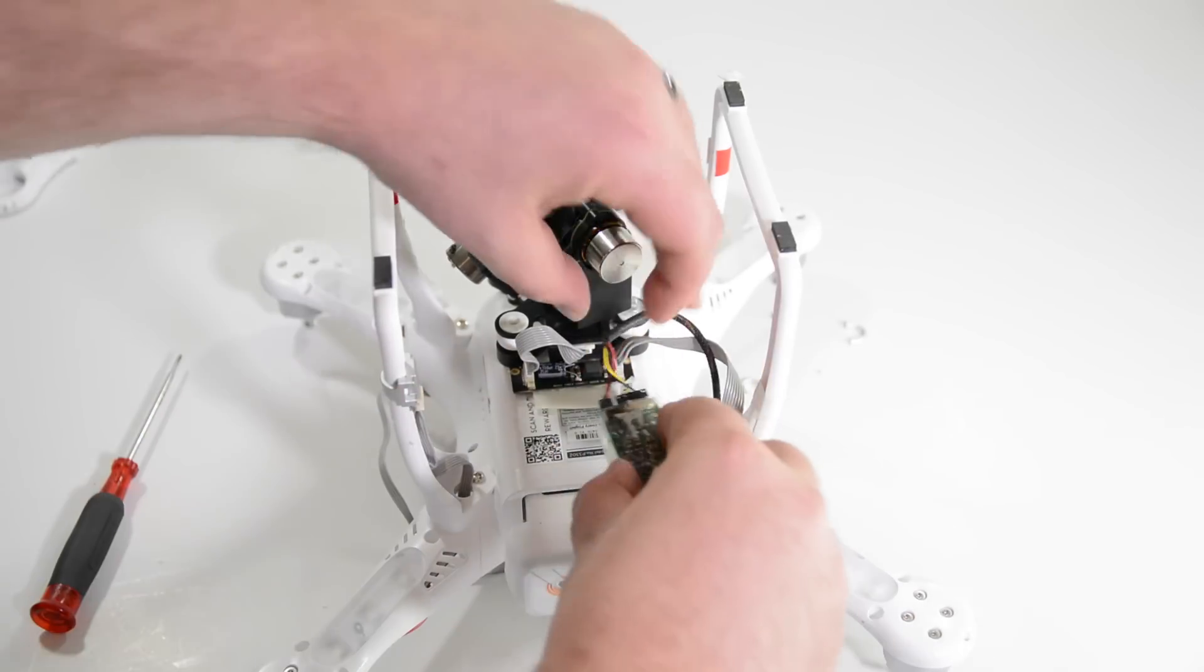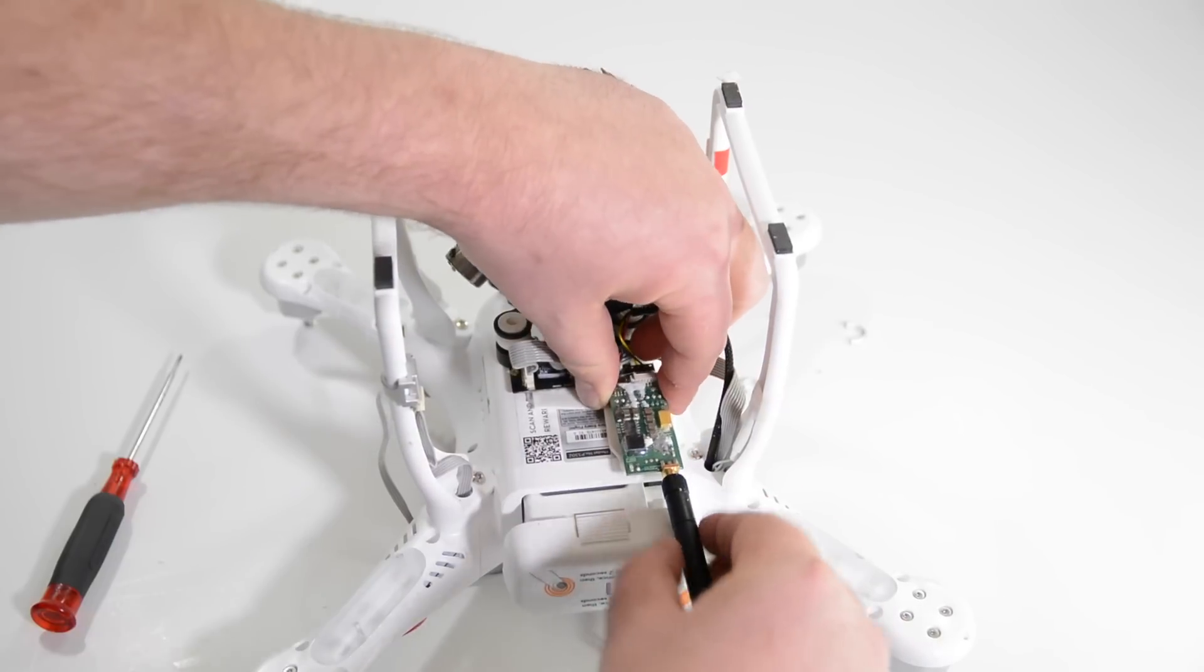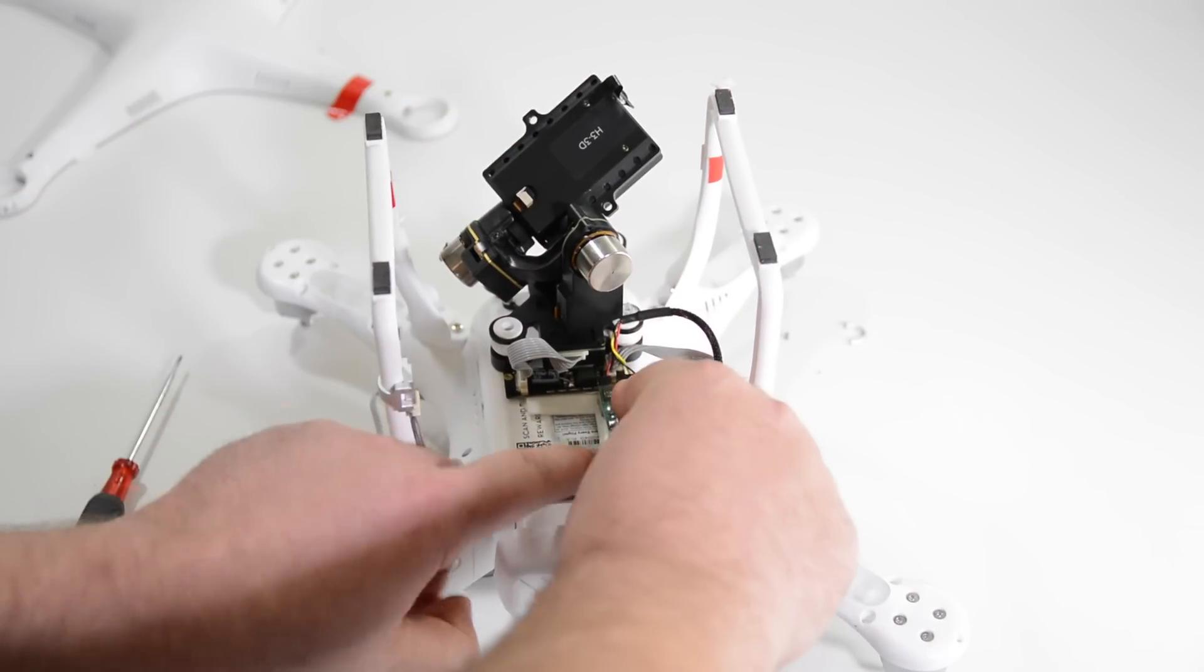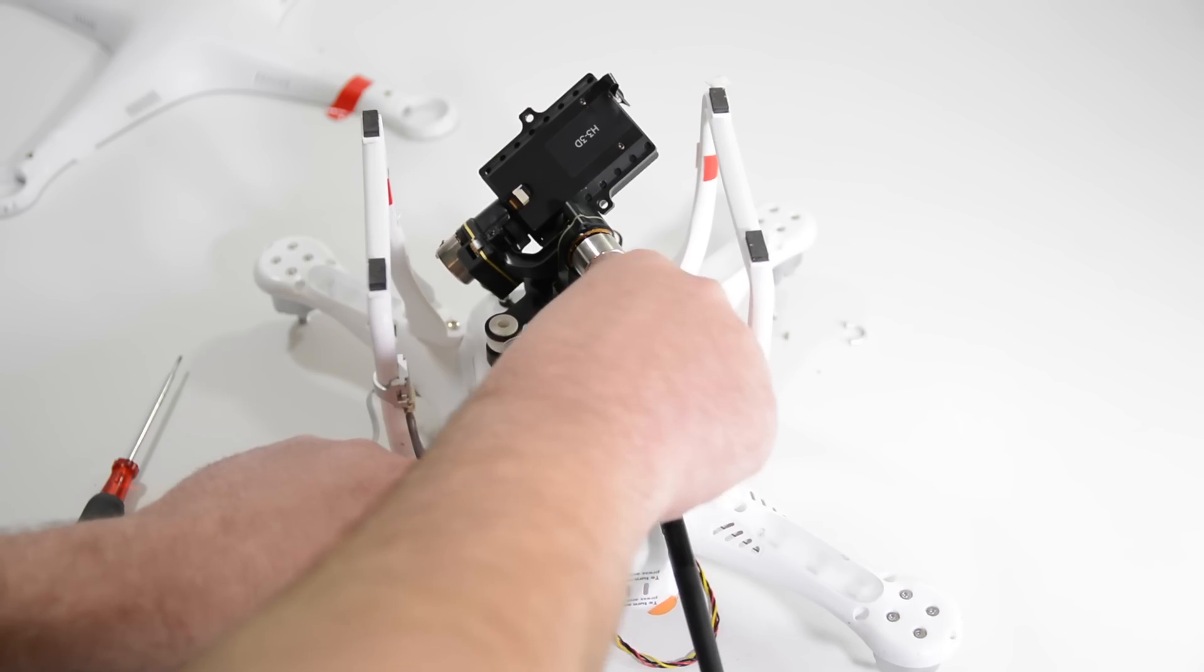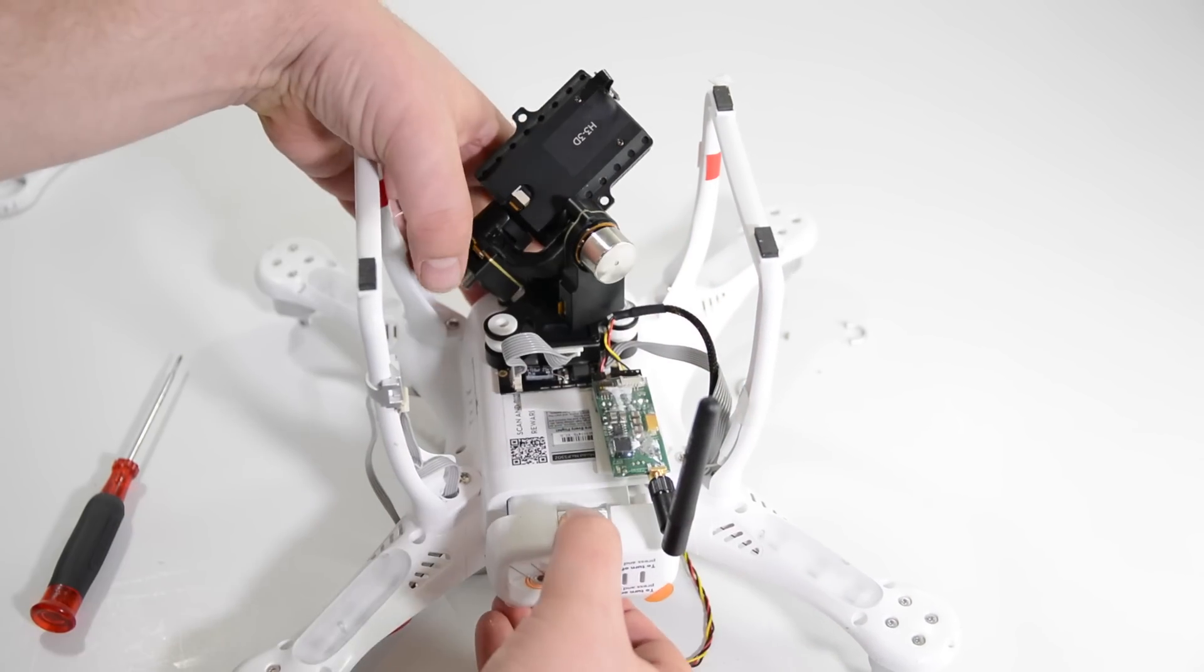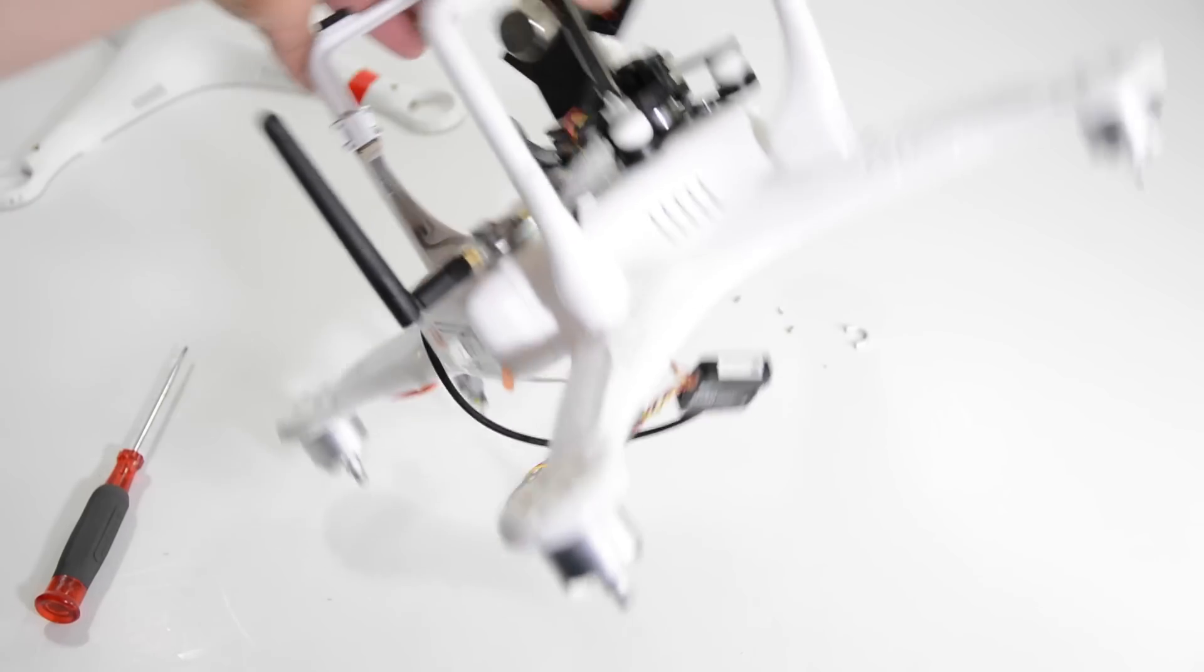Now it's very very important to never start up your quadcopter without an antenna on your transmitter. If you do that it's just going to send too much power and you're going to ruin your transmitter so always keep an antenna on your transmitter.